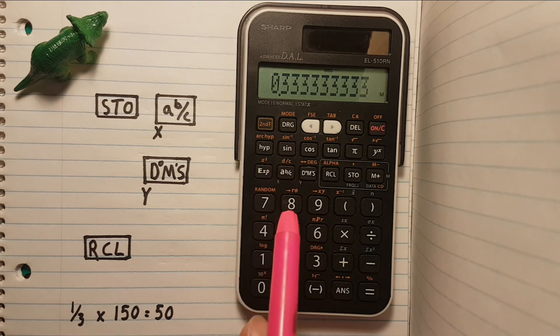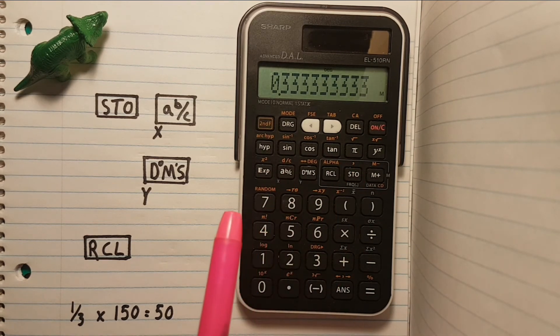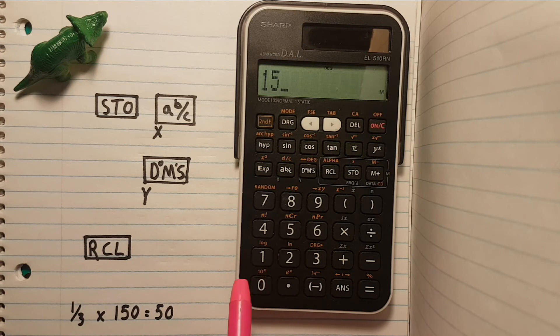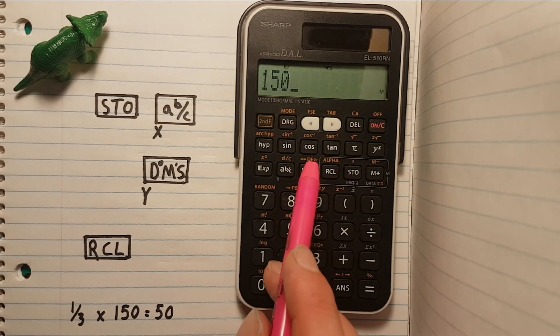So instead what we can do is store this as the variable X. Second, we want to use the number 150 in our calculation. We'll store this as variable Y.